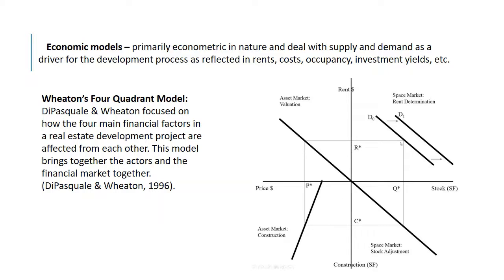Economic models primarily reflect rents, cost occupancy, investment yields, and so on — looking at the economic aspect of the project. Wheaton's four quadrant model is a good example. De Pascal and Wheaton focused on how the four main financial factors in a real estate development project affect each other. This model brings together the actors we previously saw and the financial market.